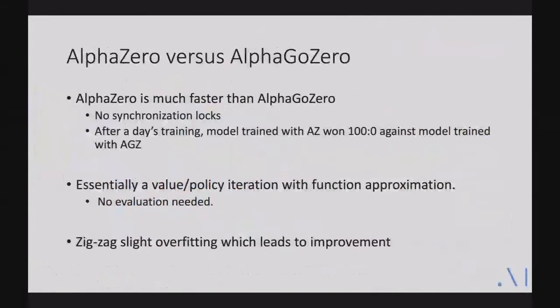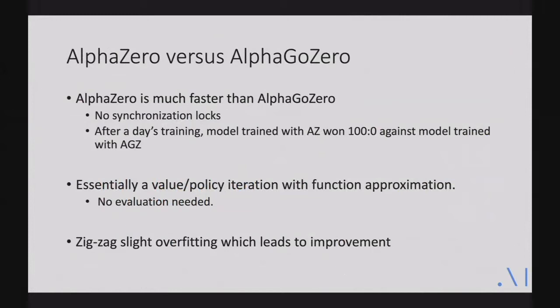Comparing AlphaZero versus AlphaGo Zero: AlphaZero is much faster because there are no synchronization locks — you don't need to wait for a new model and restart the replay process. Even with data trained by multiple models simultaneously, it converges. An interesting observation is that simply doubling the number of rollouts for white gives drastically higher performance against black, and vice versa. This suggests model strength is still constrained by model capacity rather than the search, meaning a bigger model would yield even stronger play.